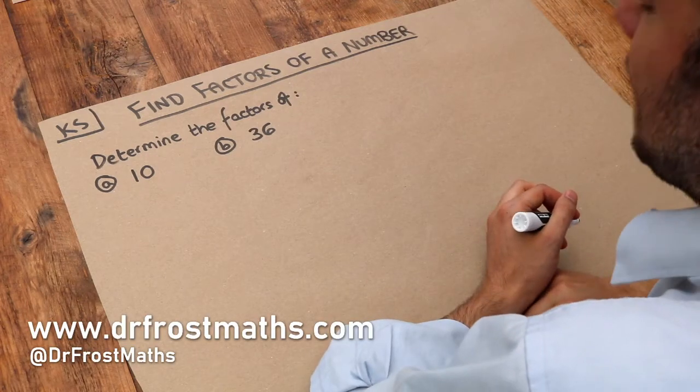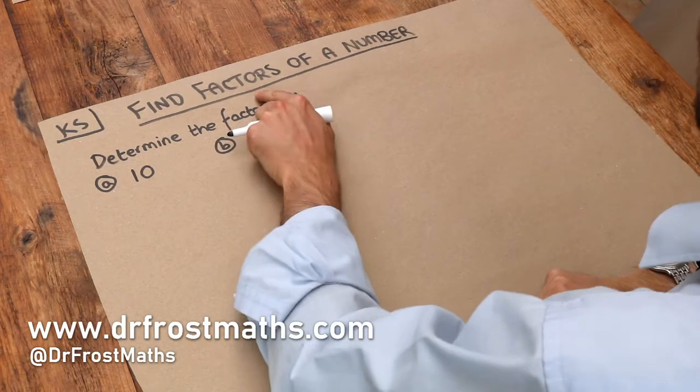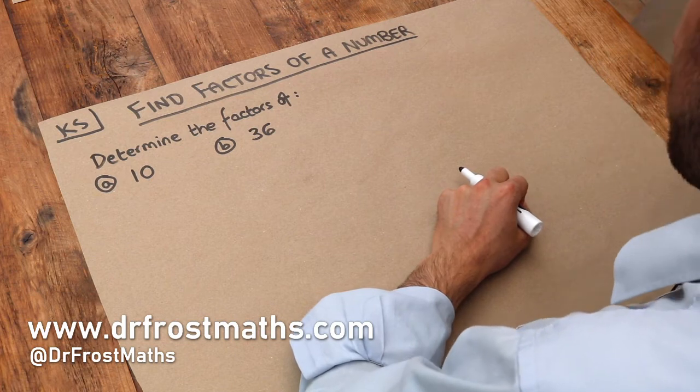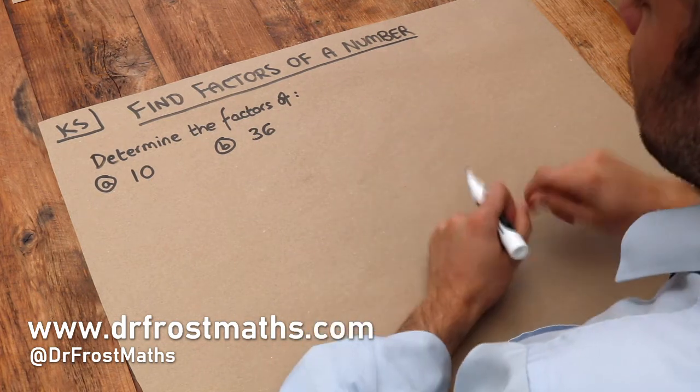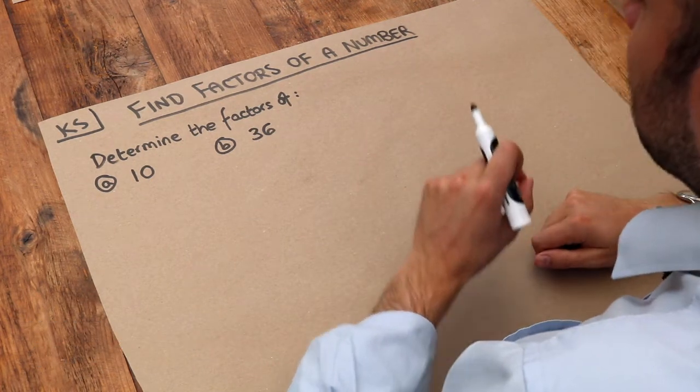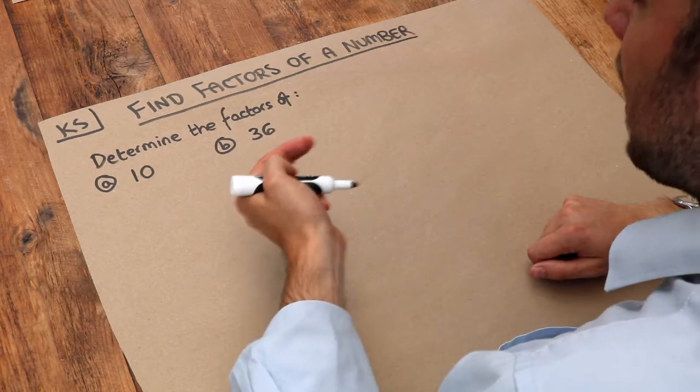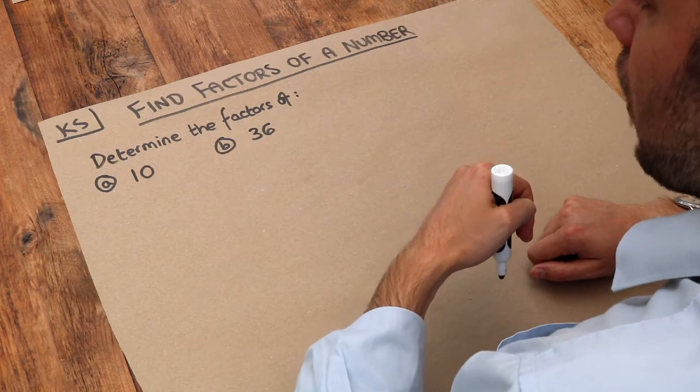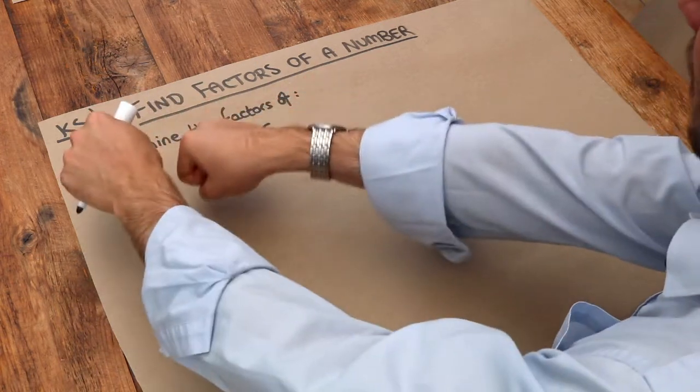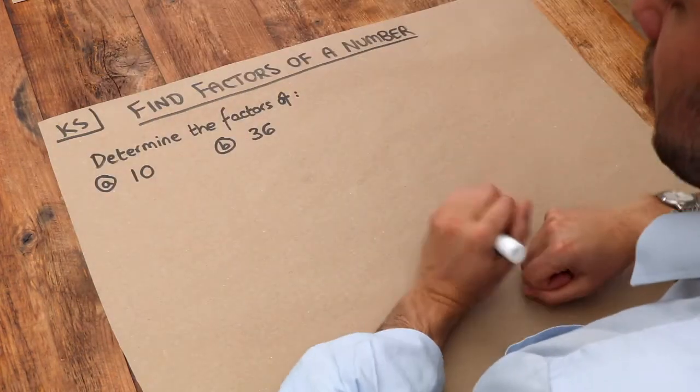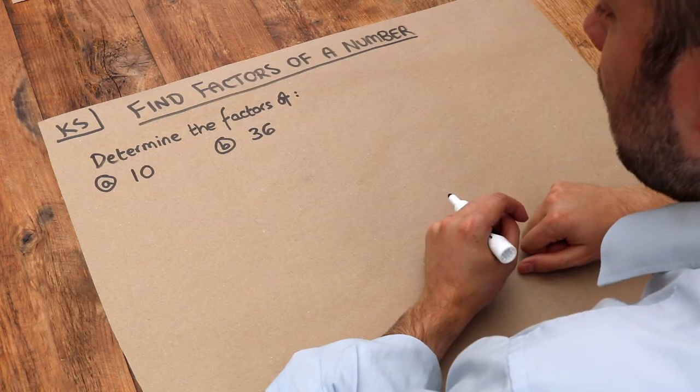Hello and welcome to this Dr. Frost Maths key skill video on finding the factors of a number. When we use the word factor in the English language, we mean something that goes into it. If I say I will factor it into my decision, I mean it's something I will consider as part of that decision. That's how we use the word factor in English.